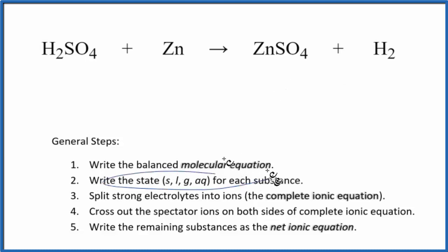Now we need to write the states for each substance. H2SO4 is a strong acid. It's a strong electrolyte. It'll dissociate in water and it's going to be aqueous. Zinc, that's a metal.